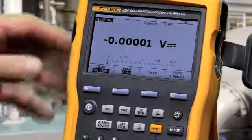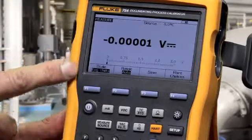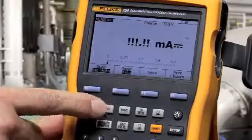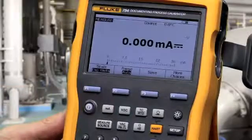To measure a function, first verify that you're in the measure screen with the measure source button. To measure milliamps, select milliamps and make your connection to the input-output terminal.